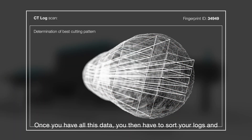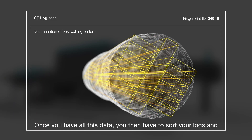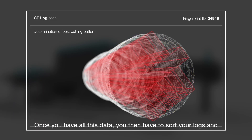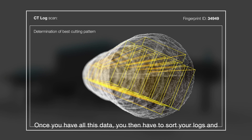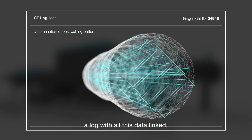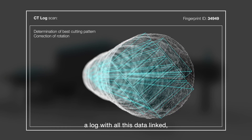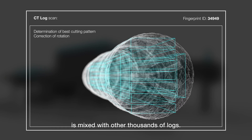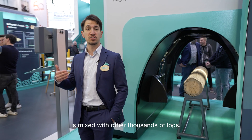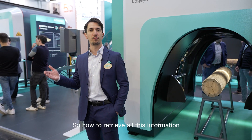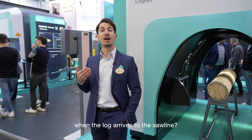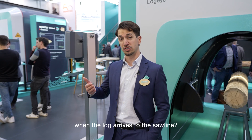Once you have all this data, you then have to sort your logs, and a log with all this data linked is mixed inside thousands of other logs. So how do you retrieve all this good information when the logs arrive at the SolEye?